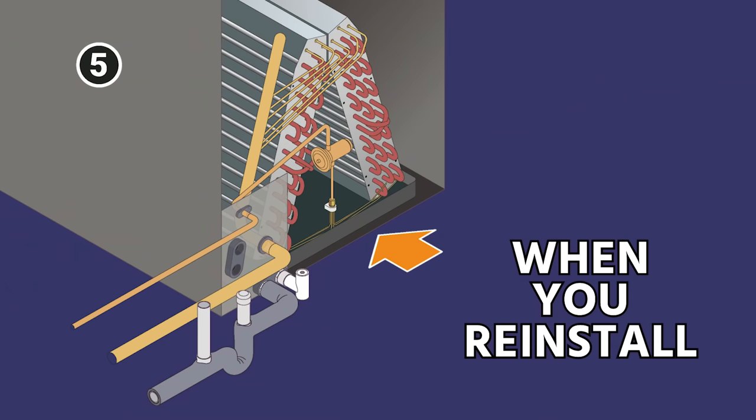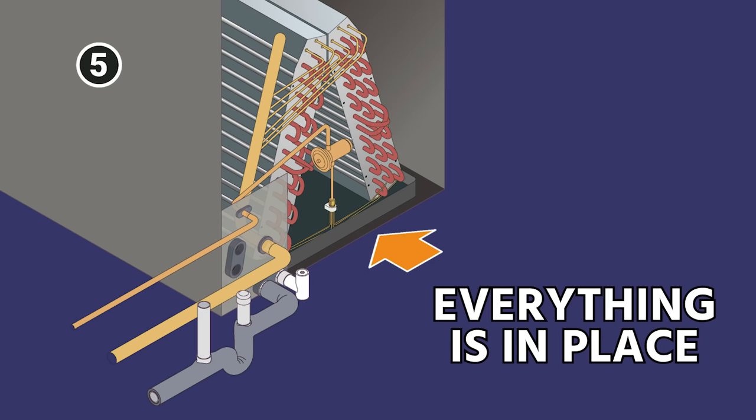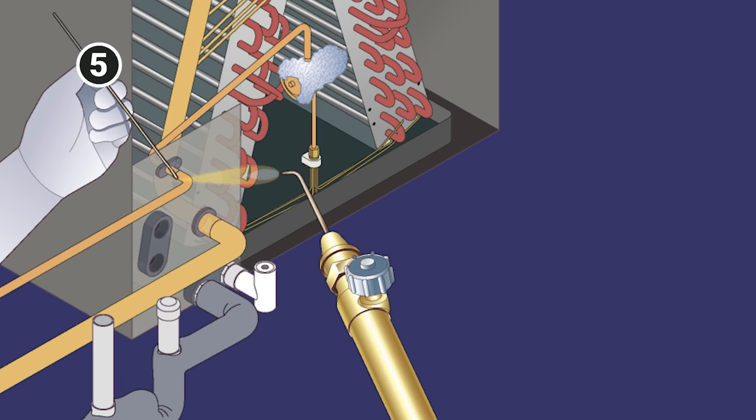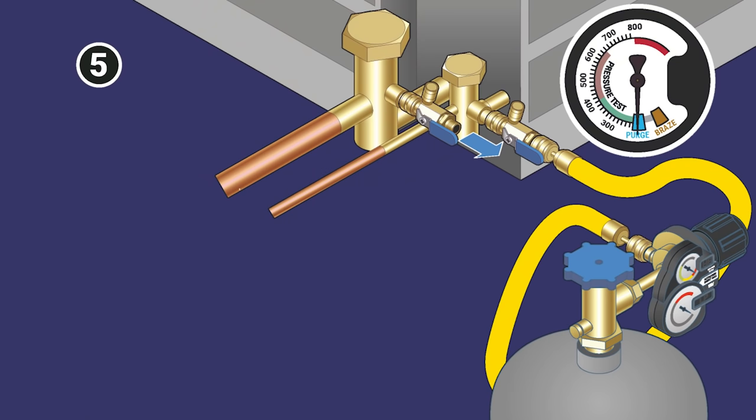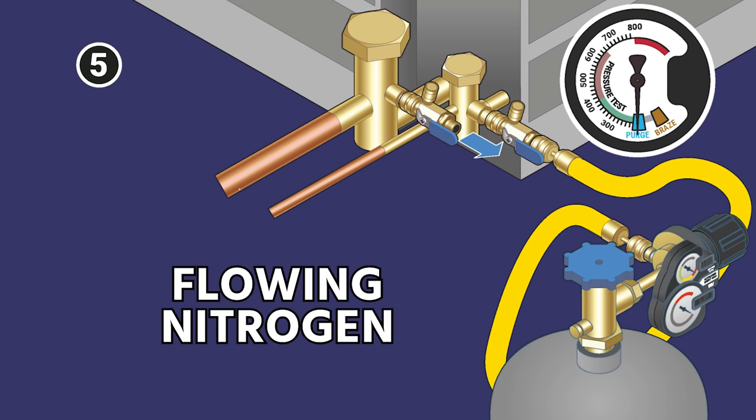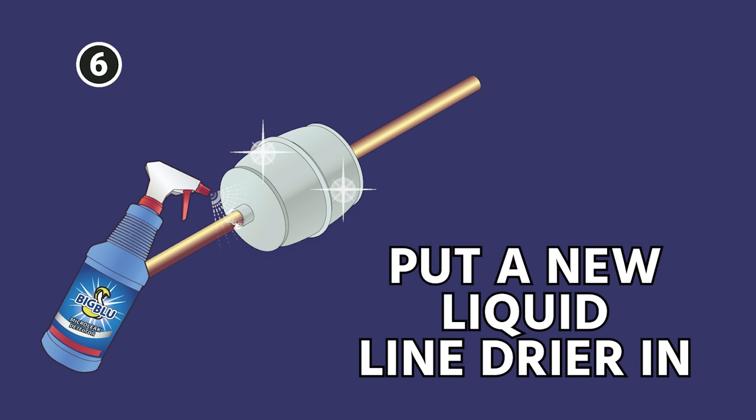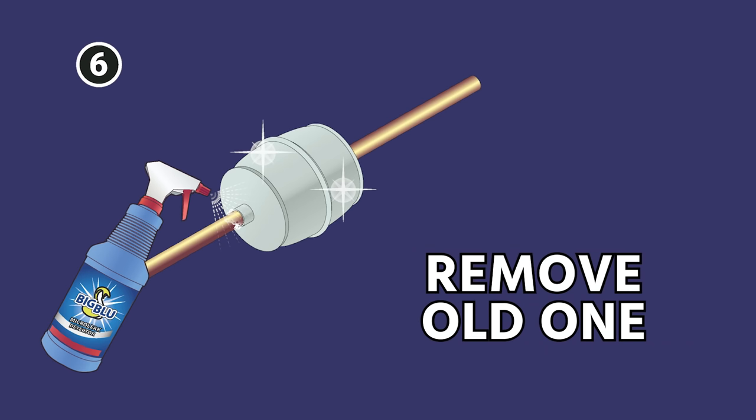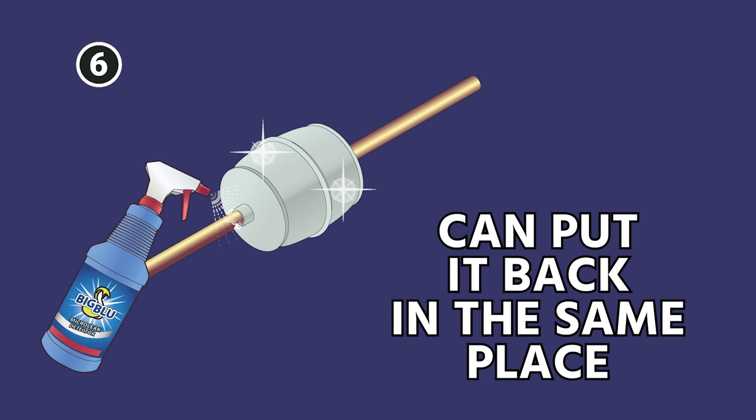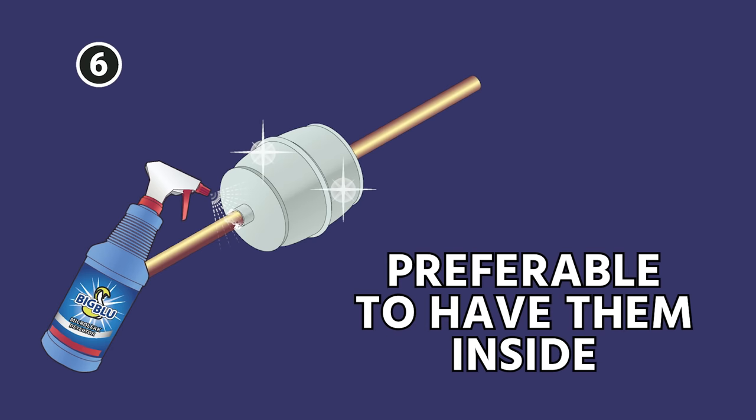When you do reinstall the evaporator coil, make sure that it's level, make sure that all of your proper retaining clips and all those things are put back into place and that everything is slid into place properly. Then you want to go ahead and braise back in your evaporator coil with nitrogen flowing. Now again, you don't want to pressurize with nitrogen. You just want nitrogen to be flowing at three to five SCFH. Make sure that you put a new liquid line dryer in and remove the old one. You can put it back in the same place as the old one, or you can straight pipe the old one and put the new liquid line dryer inside because often they are outside and it is preferable to have them inside.